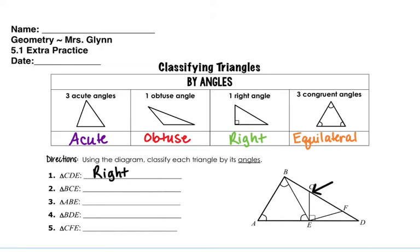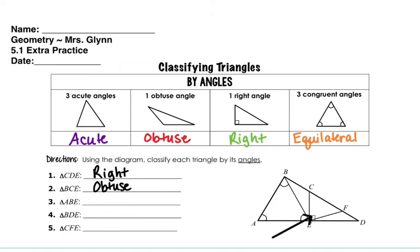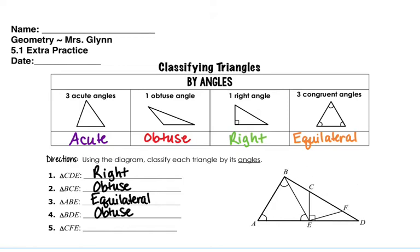BCE, which is over here — this little one — has an obtuse angle at C. And then for ABE, which is the one that has three corners that are all congruent, that would be equilateral. And then BDE, which is this big one right over here, would be obtuse because of angle E.